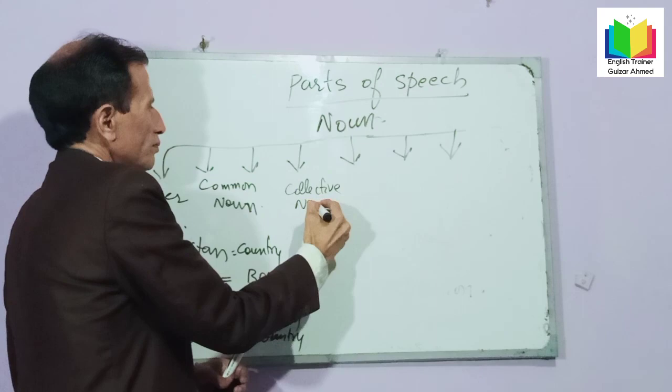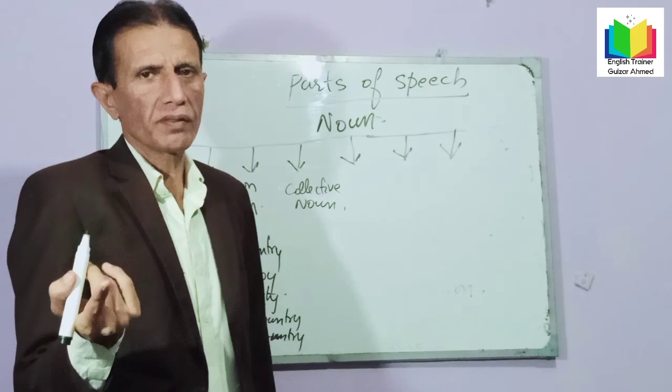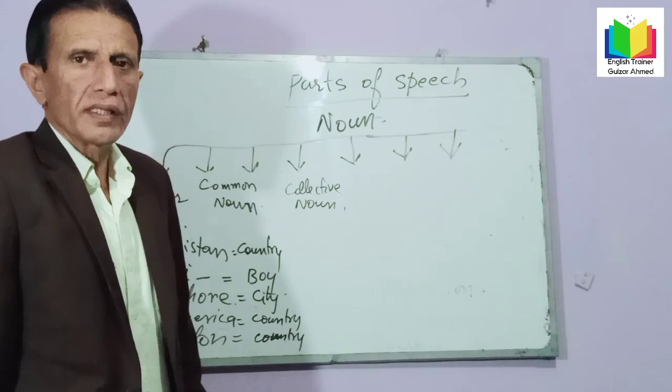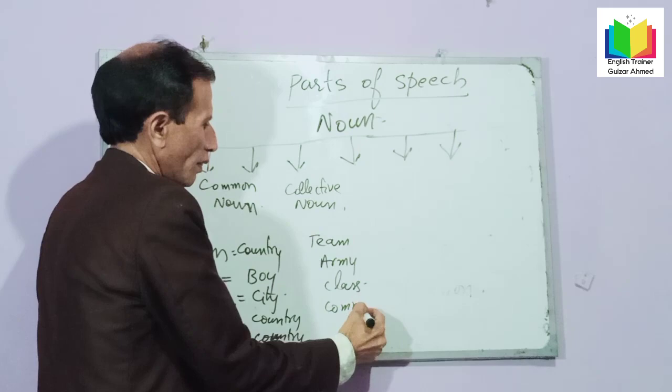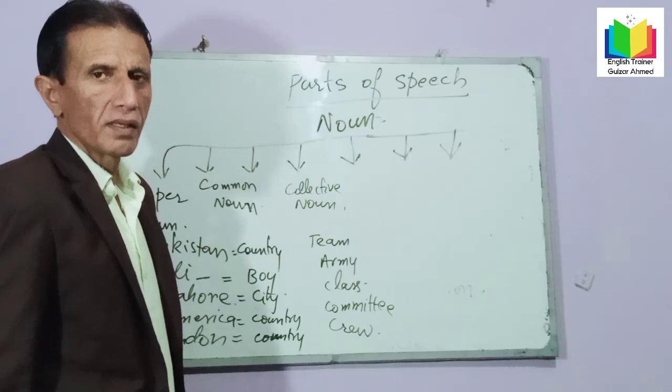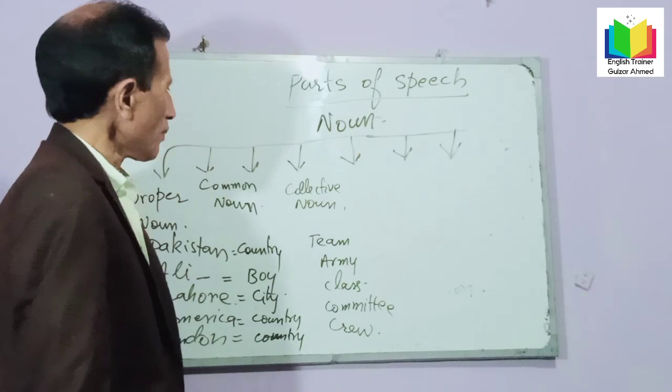Number three: collective noun. 'Collect' means group — a collective noun is a group of some persons or things. Like: a team, army, class, committee, crew — 'crew' means a group of workers. So we can add an article before these collective nouns.